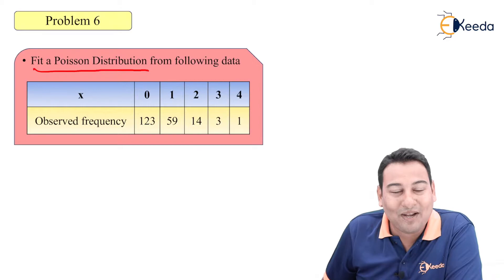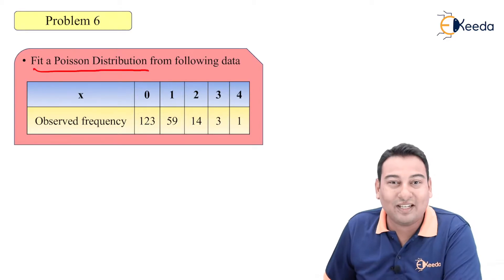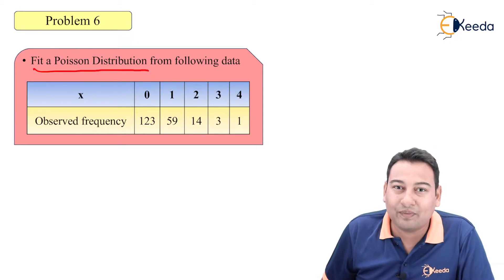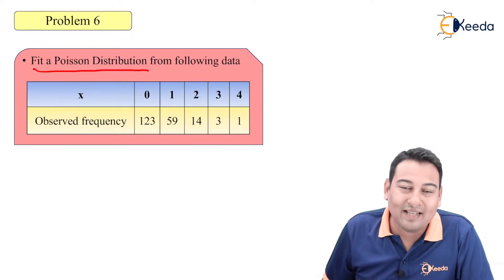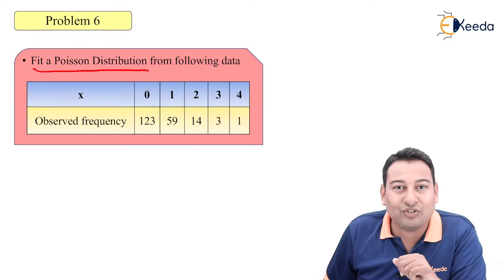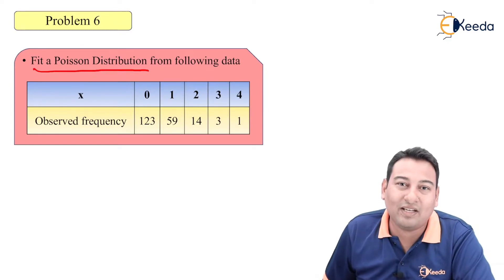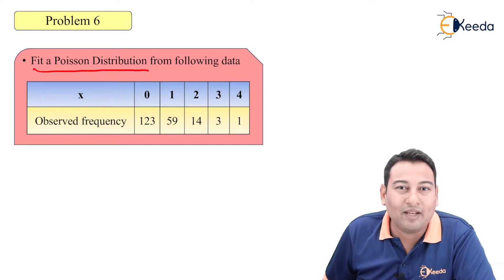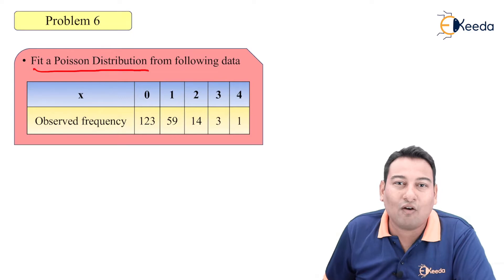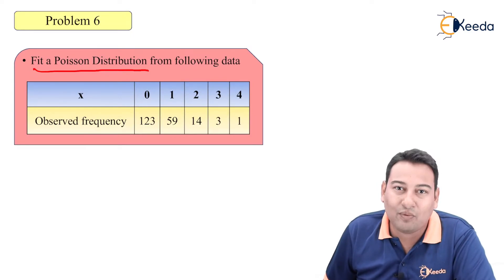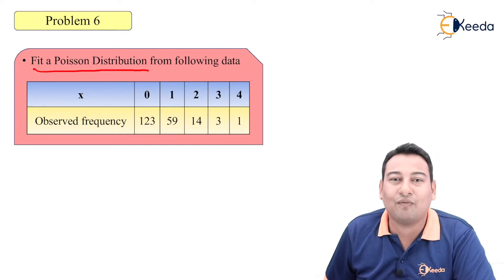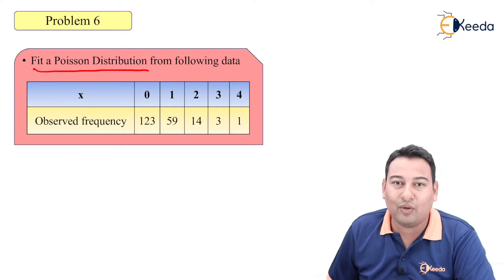Remember the problem in binomial distribution — I dictated you a note. What do you mean by fitting? Fitting means finding expected frequency. The way you solve in binomial distribution, I am going to repeat that procedure here. The only difference is that here I am going to use the Poisson Distribution formula for finding the frequencies.